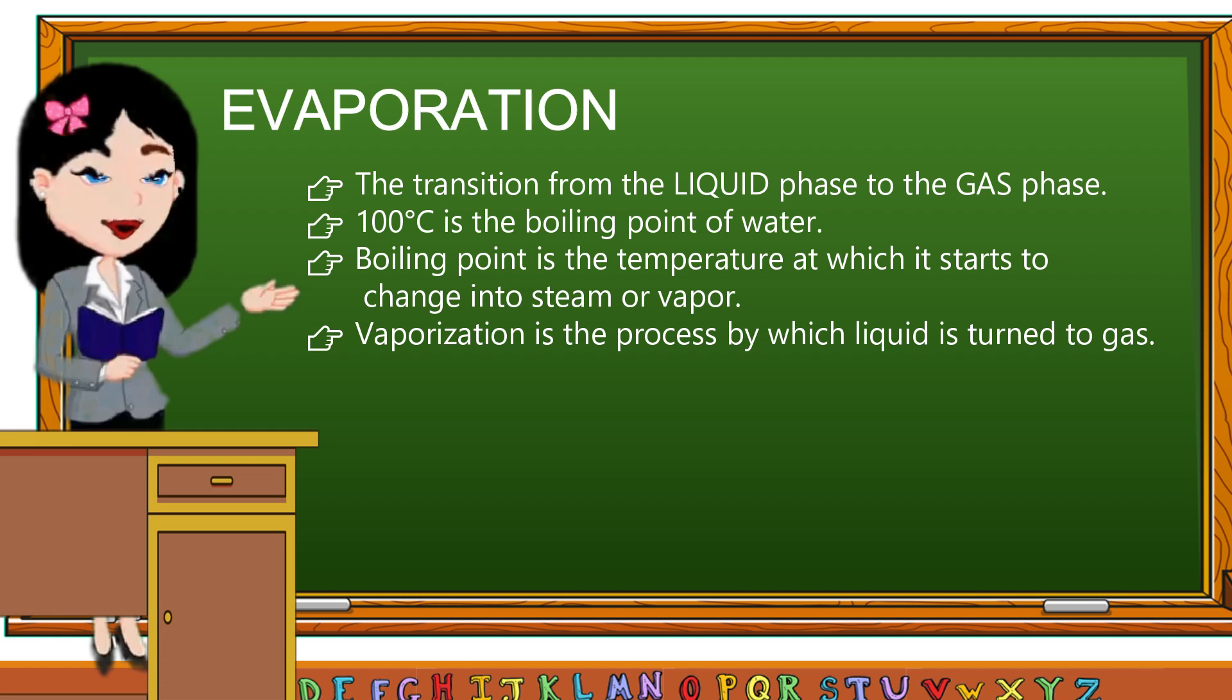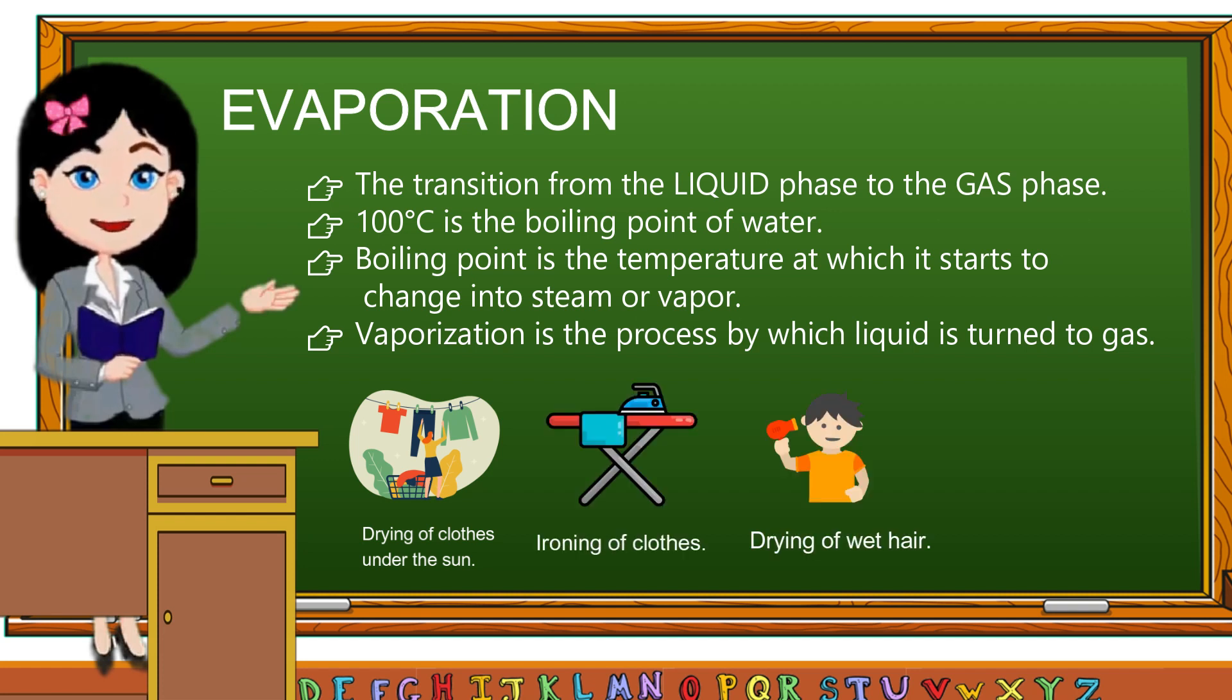Some everyday life examples of evaporation are: drying of clothes under the sun, ironing of clothes, drying of wet hair, cooling down of hot soup or other hot liquids, drying up of different water bodies, and many more.